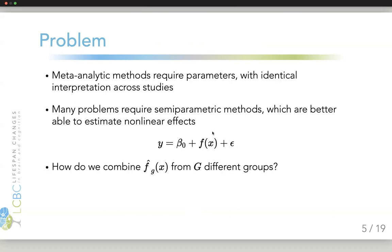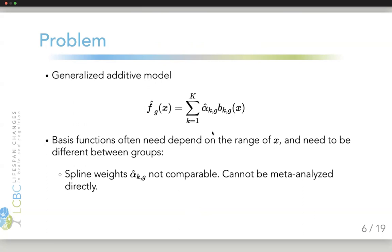Another question is, how do we combine the estimate f hat sub g from g different groups? One example that we use in this paper and in the package is generalized additive models. A generalized additive model estimates the function as a combination of spline basis functions, where each basis function receives a weight which we call alpha hat. The kth basis function gets the weight alpha hat k.